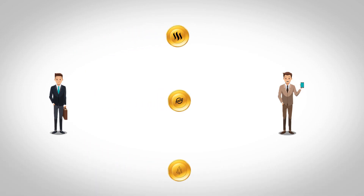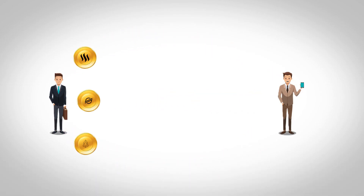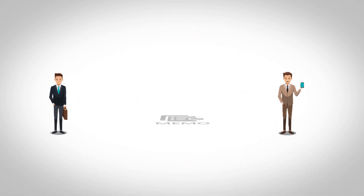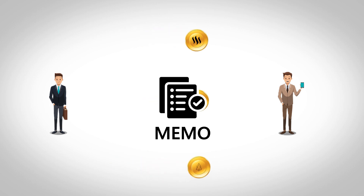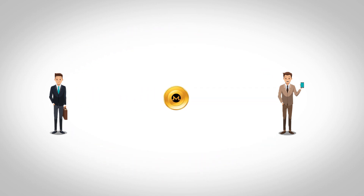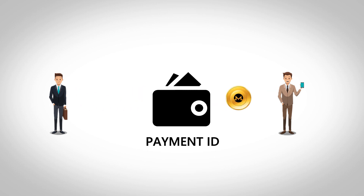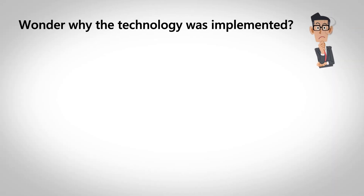For transactions in XLM, EOS, and STEEM, this technology is called MEMO, while the technology is known as Payment ID for transactions in XMR. Despite the different names, the technology serves the same purpose.